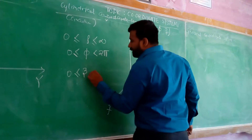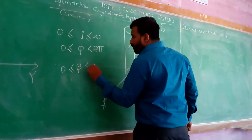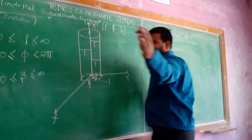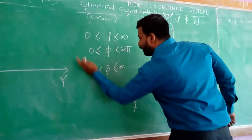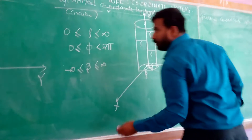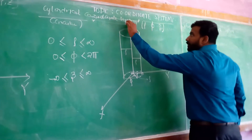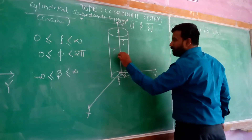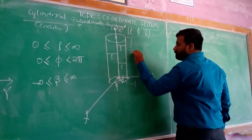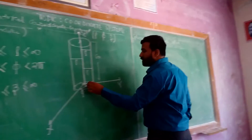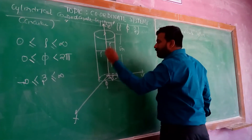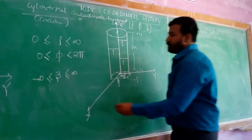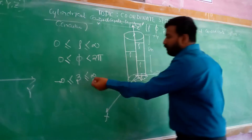Next is z. Z runs from minus infinity to plus infinity, where z is the height of the cylinder. Although height can't be negative in everyday terms, negative is only a reference value. If the origin is at the center of the cylinder — say the height is 8 meters — z runs from minus infinity to plus infinity.